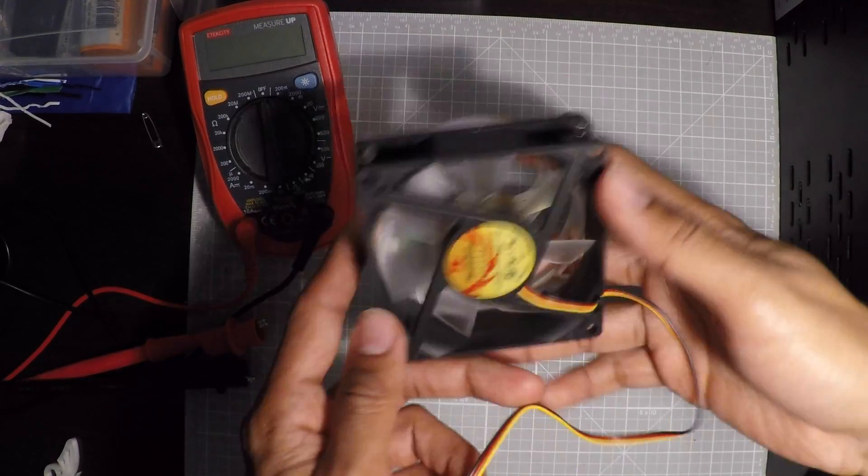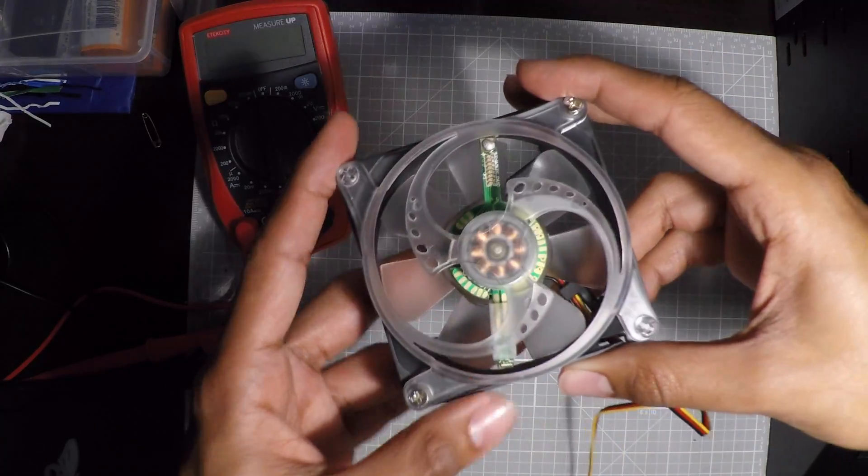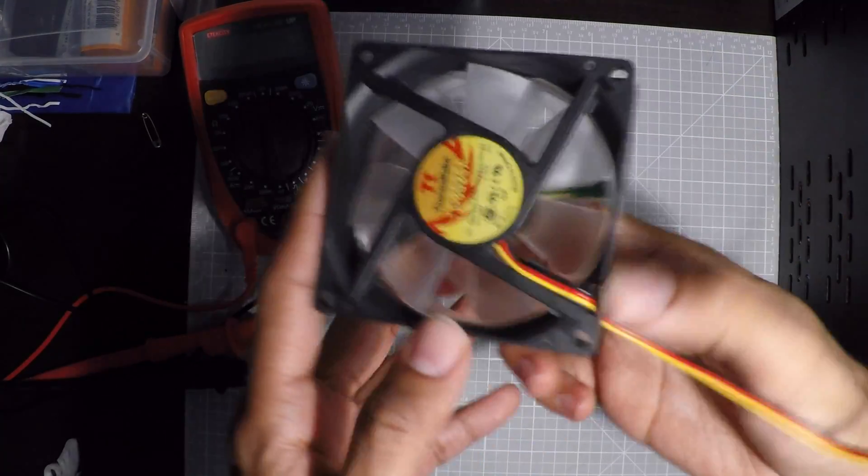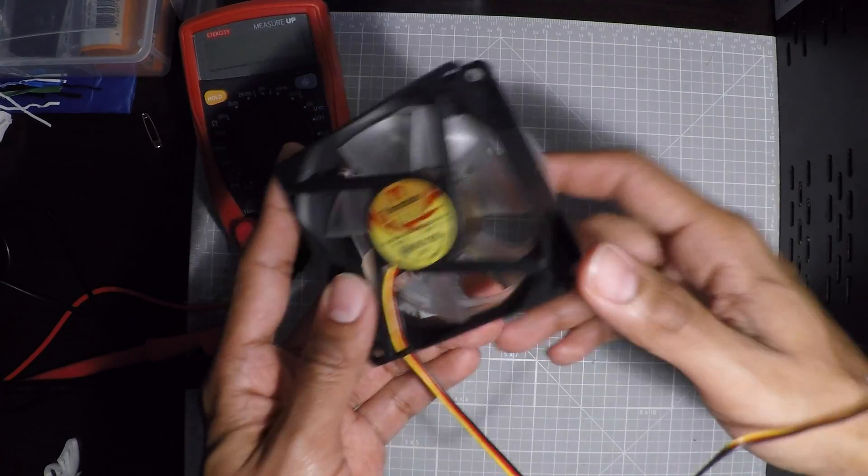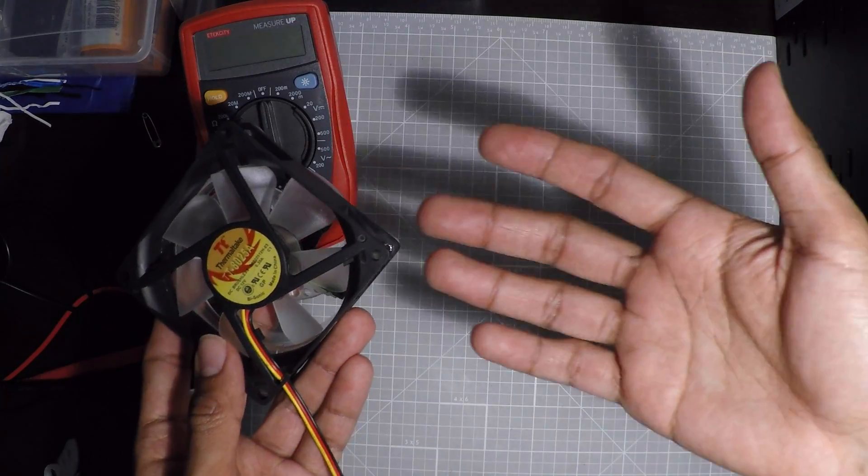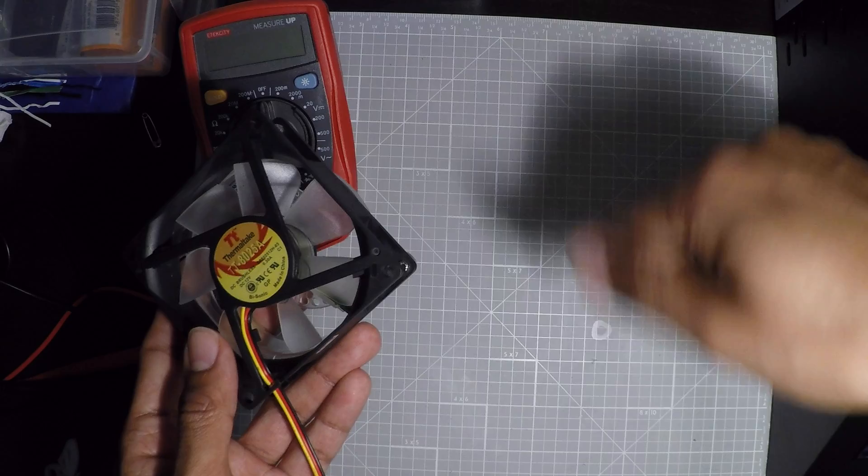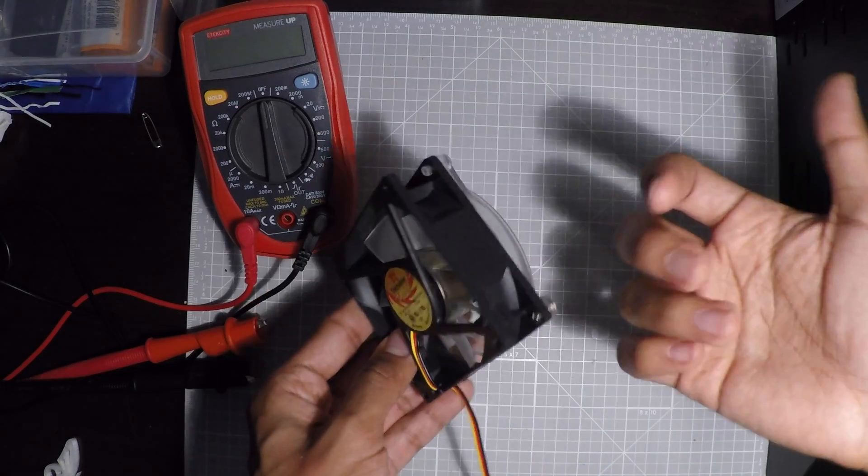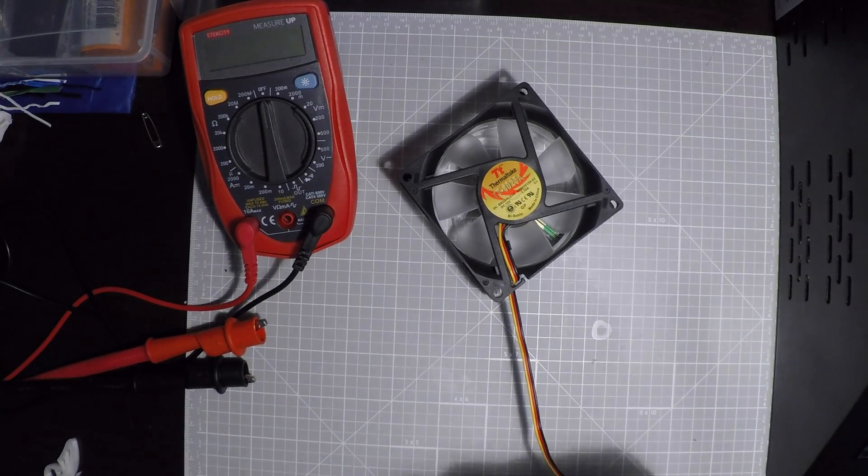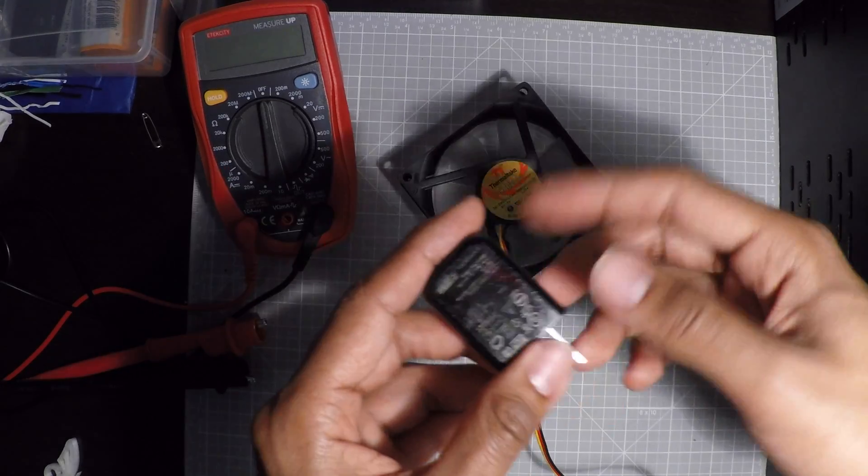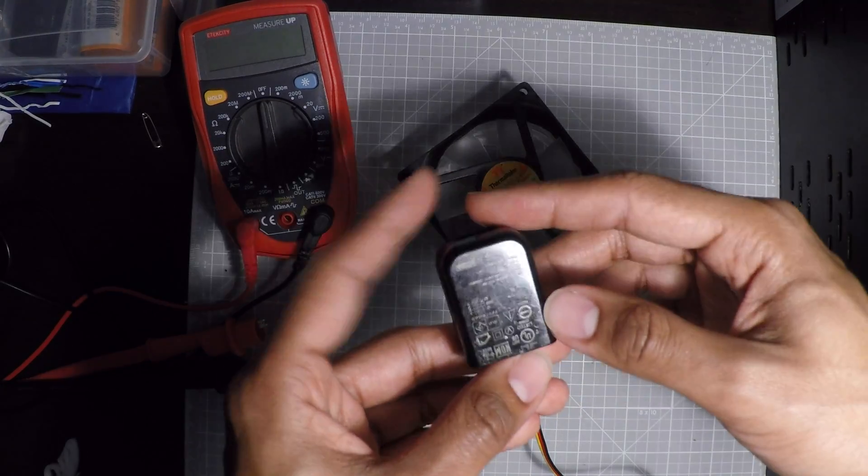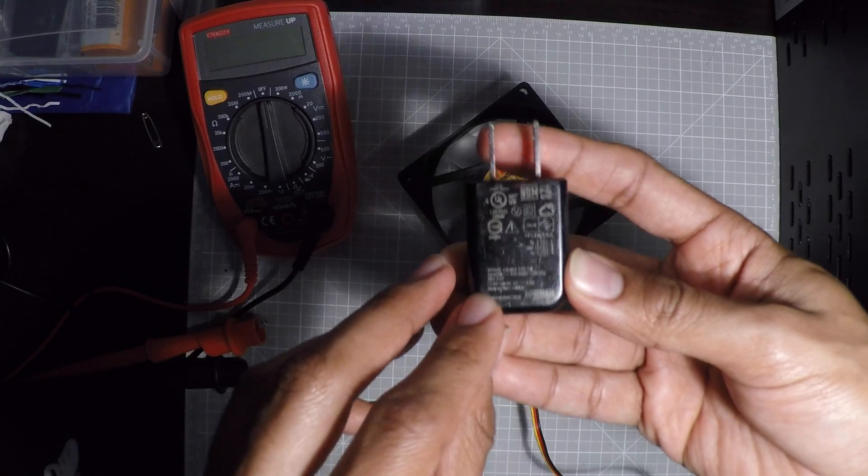The idea is to use this 80mm fan that a friend gave me. To power it, I want to use something commonly found around the house: a USB adapter. Most USB wall adapters you use to power your phone have 5 volts and give around 1 amp of current.